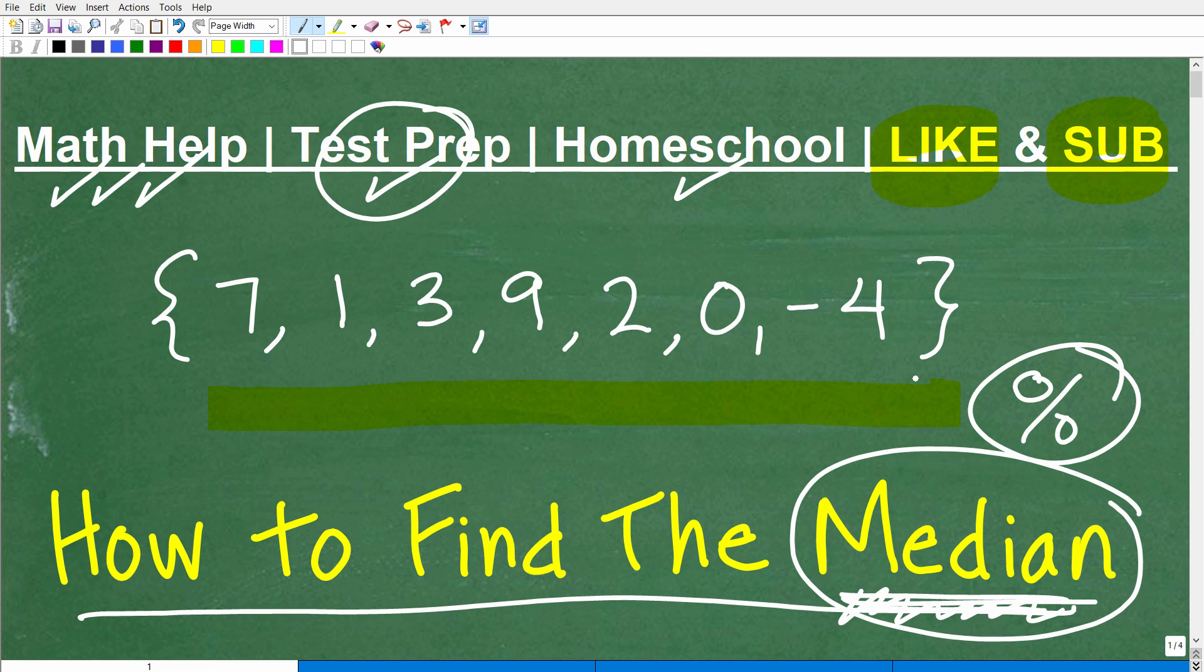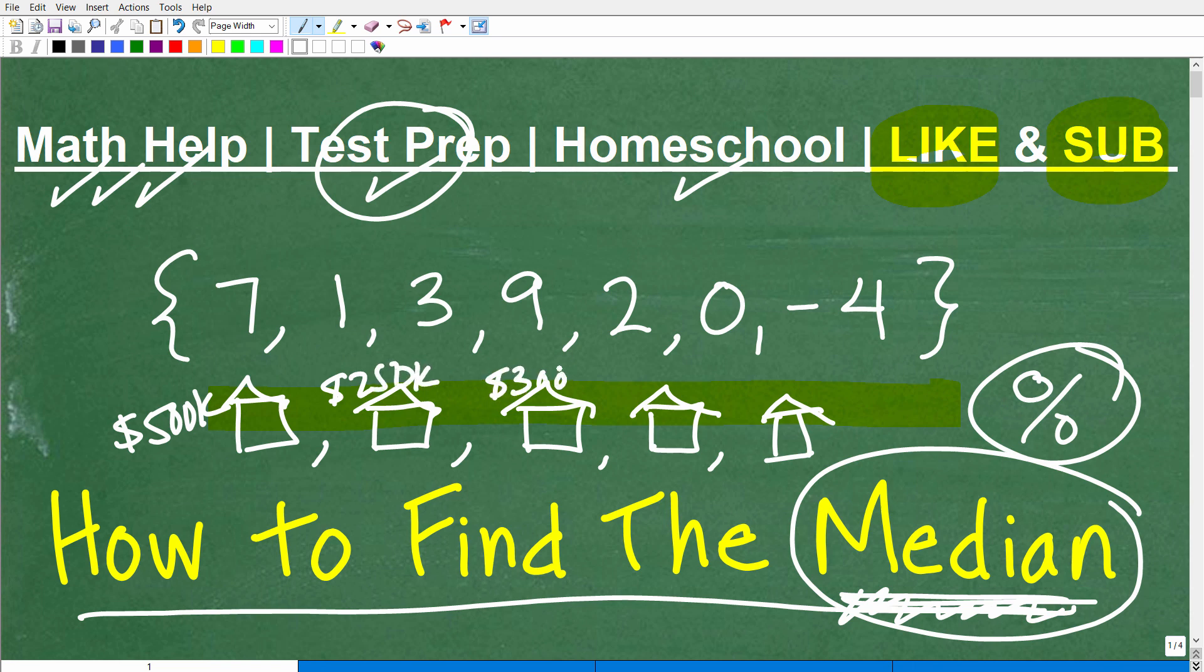But let's get into the median here. So we have a list of data, just random data. But the median, again, this data here could be, let's say, for example, home sales in your local city or town. You know, we're talking about data. We're talking about trying to identify some trend in the data. So let's say this house here went for $500,000. This house went for $250,000. This house went for $300,000. This house went for $180,000. Maybe this house went for $420,000.